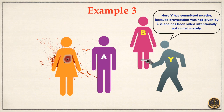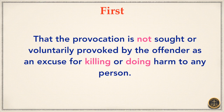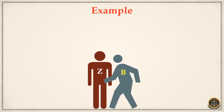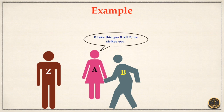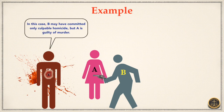There are certain exceptions within Exception 1. Exception 1 of Exception 1: the provocation is not sought or voluntarily provoked by the offender as an excuse for killing or doing harm to any person. For example: Z strikes B. B is by this provocation excited to violent rage. A, a bystander, intending to take advantage of B's rage and to cause him to kill Z, puts a pistol into B's hand for that purpose. B fires the pistol and kills Z. In such a case, B may have committed only culpable homicide, but A is guilty of murder.